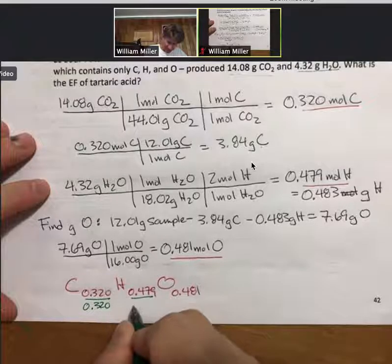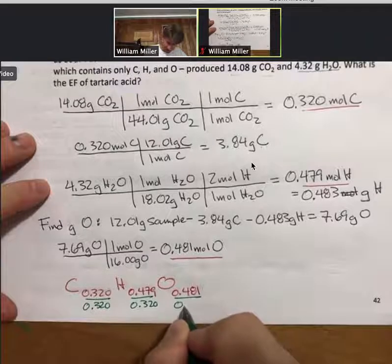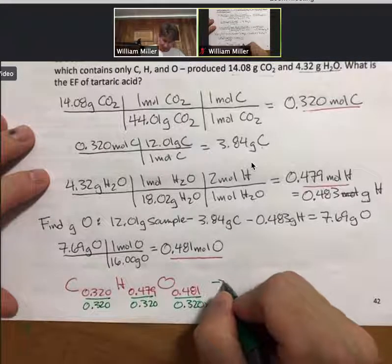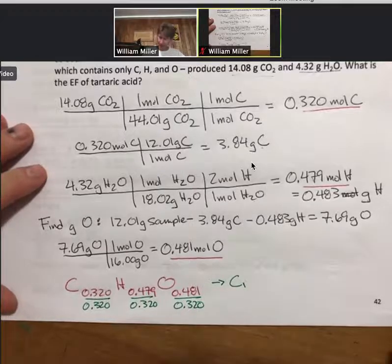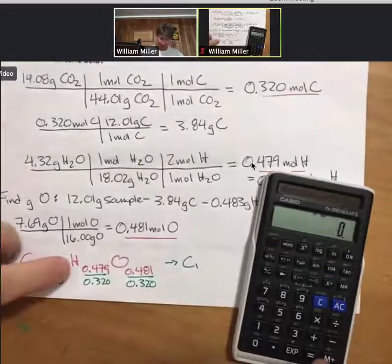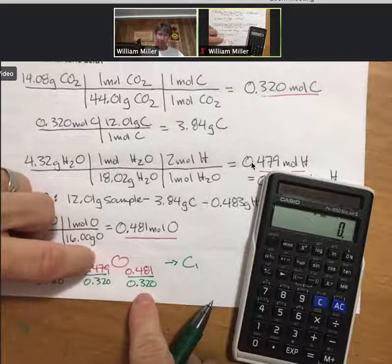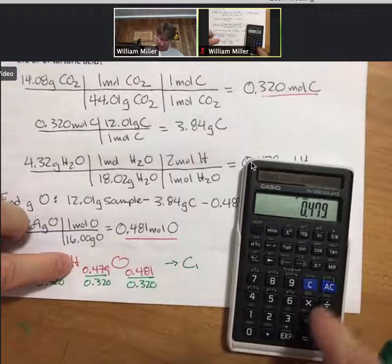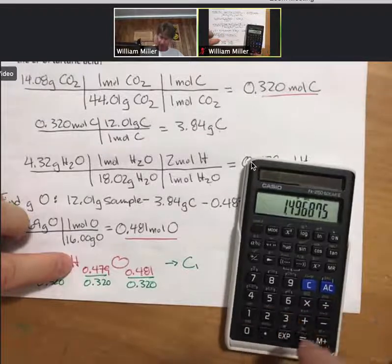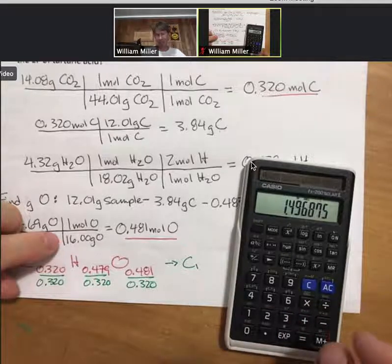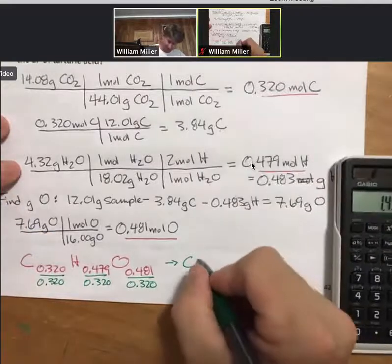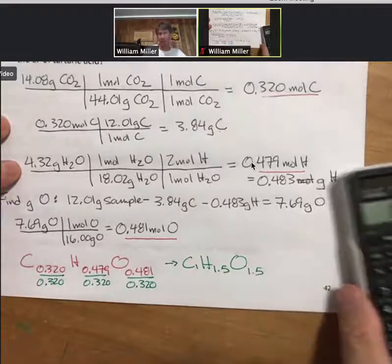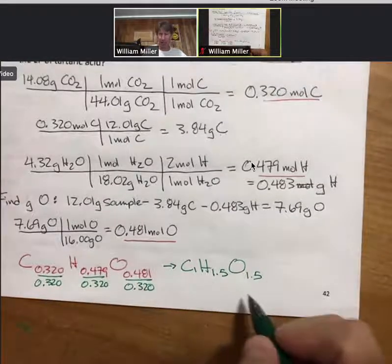See if I get small whole numbers. And then when I do that I get C1. 0.479 divided by 0.32 is 1.497, which is 1.5. And O will be 1.5 as well. We don't have small whole numbers yet.